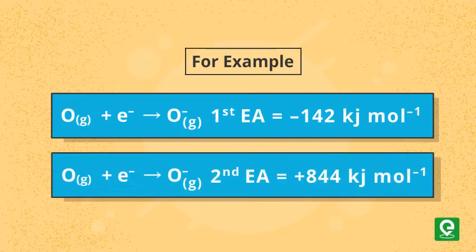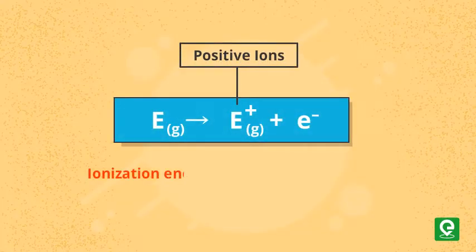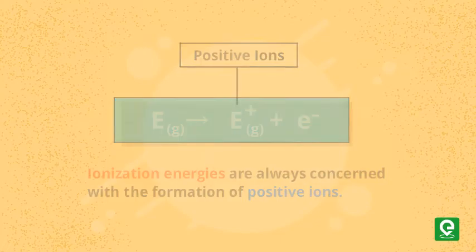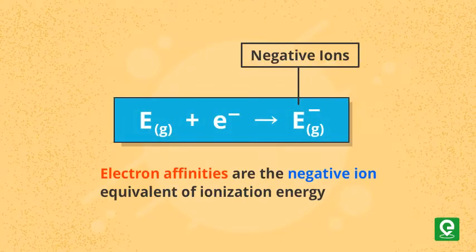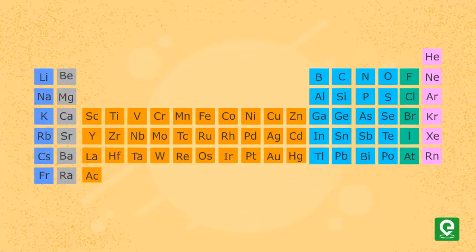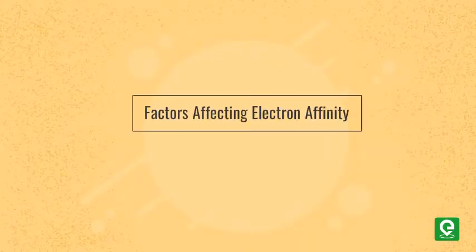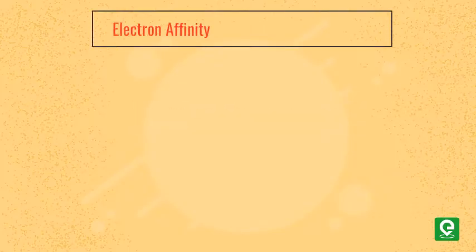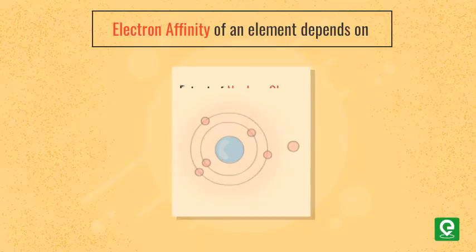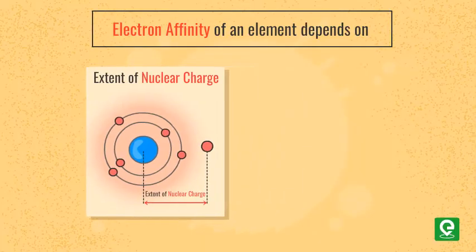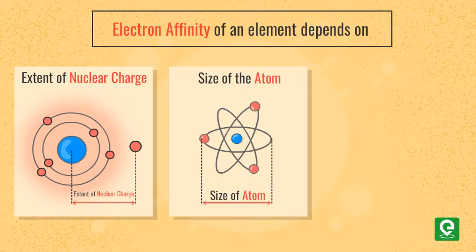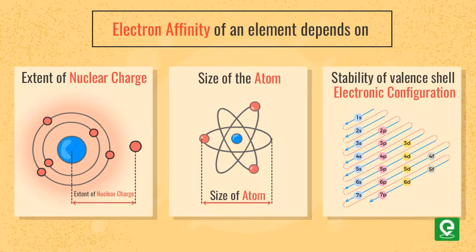As we know that ionization energies are always concerned with the formation of positive ions, electron affinities are the negative ion equivalent of ionization energy and their uses are almost always confined to elements in groups 16 and 17 of the periodic table. Factors affecting electron affinity: electron affinity of an element depends on (a) extent of nuclear charge, (b) size of the atom, (c) stability of valence shell electronic configuration.